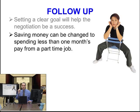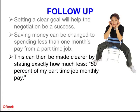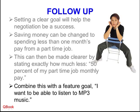So now he's getting very clear. Subjectively, this is the value he's looking for. This can be made even more clear, starting with exactly how much less — because he did say less than one month's pay. What do you mean less? 1% less? 2% less? Here we get very specific: 50% of his part-time job's monthly pay. Take his monthly pay from his part-time job, cut it in half — 50%. That's the price he's looking for.